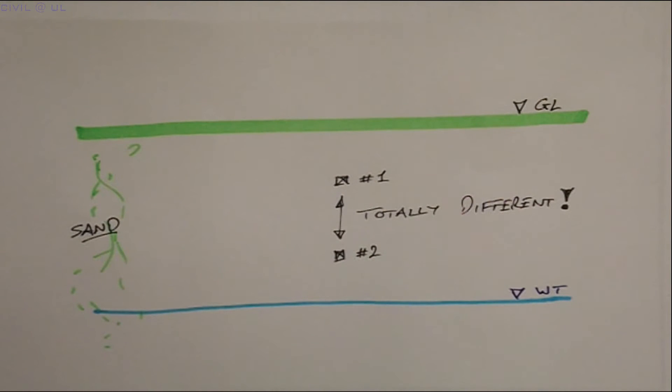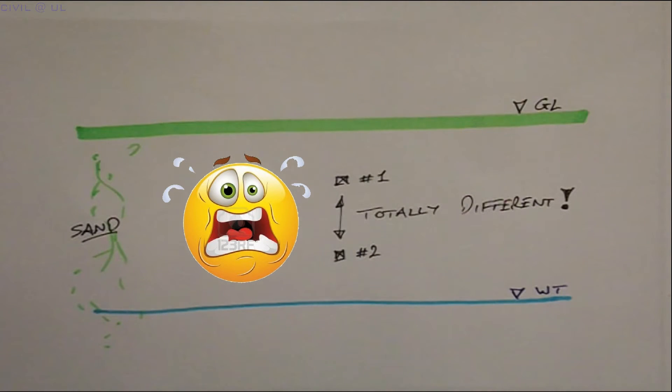If such variations were found from tests on steel, eyebrows would be raised. Typically, we would expect the strength of steel to vary by no more than a few percent.